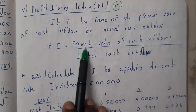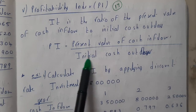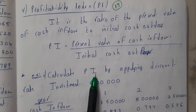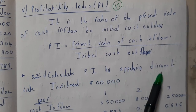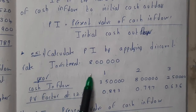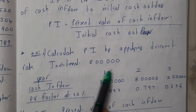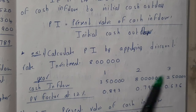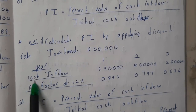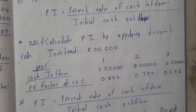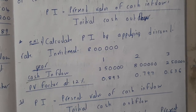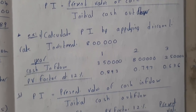So what you received as inflow and what you spent on the machinery — we calculate PI by applying the discount rate. The investment is nothing but 8 lakhs, and yearly cash inflows are given along with the PV ratio. If they give the PV ratio, we should feel really lucky, because calculating those values otherwise is quite complex.